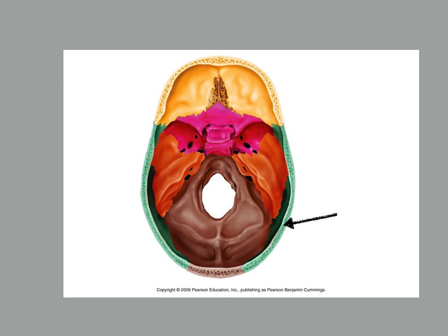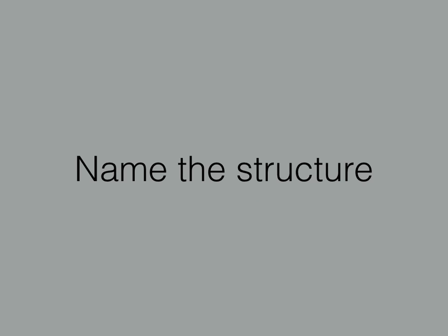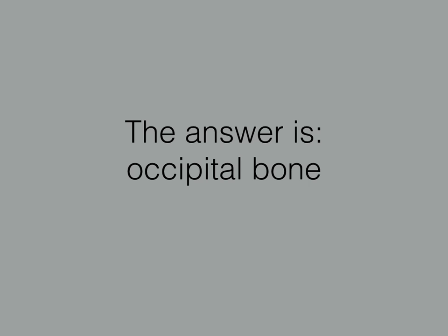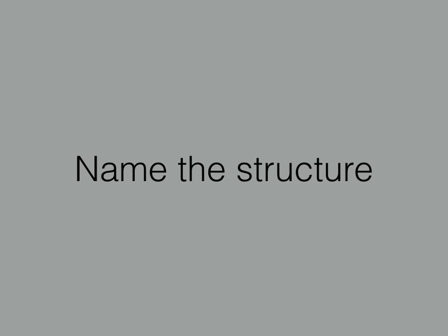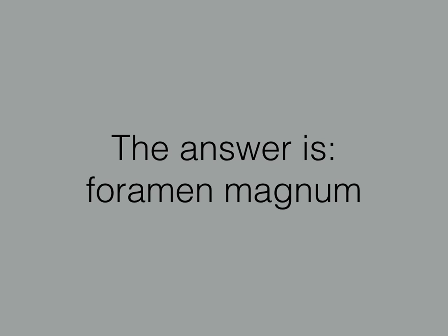Just the name of this bone. That's the parietal bone. And the name of this bone. That's the occipital bone. This time it is the opening here in the bottom. That's the foramen magnum.